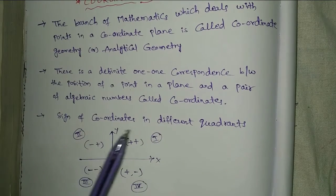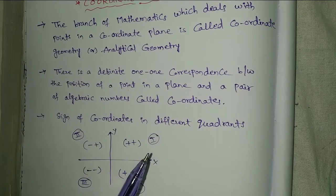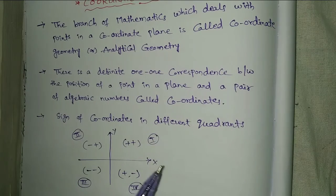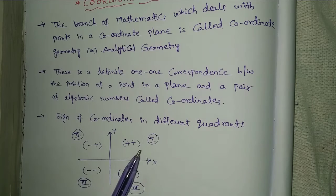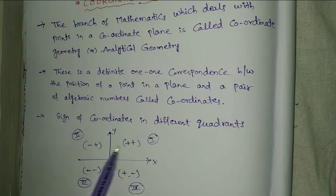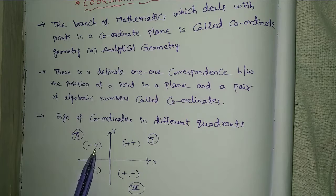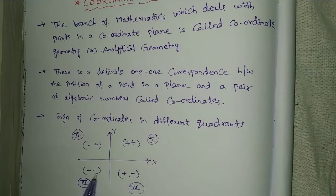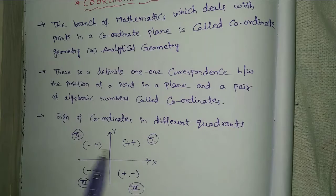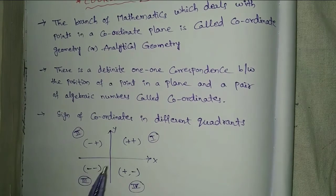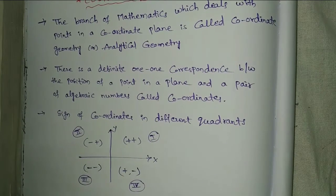Sign of coordinates in different quadrants. First quadrant: plus, plus. Second quadrant: minus, plus. Third quadrant: minus, minus. Fourth quadrant: plus, minus.